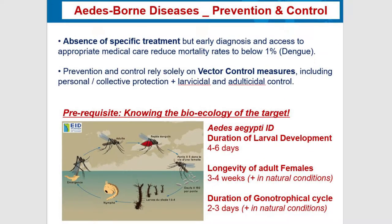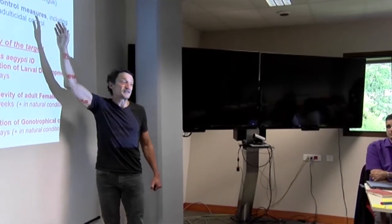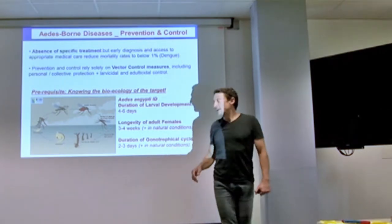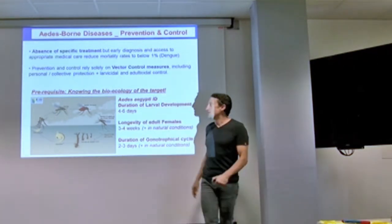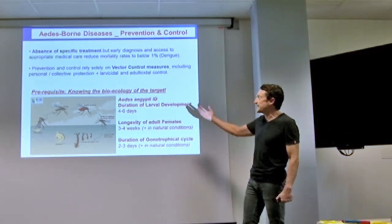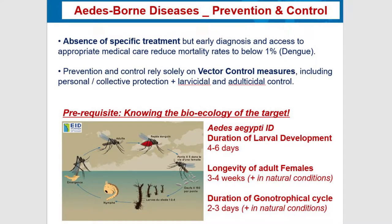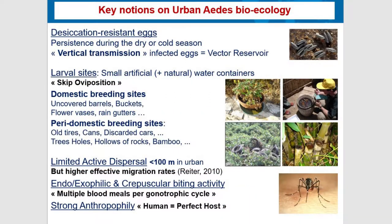In terms of prevention or control, let's go back to some important notions. We don't have, except for yellow fever, any cure or therapeutics, or any preventive drugs against these diseases. So prevention and control are mainly based on vector control. To conduct vector control, it's important to know the bioecology of the target — in this case, Aedes mosquitoes, urban Aedes — in terms of duration of larval development, longevity of adult females, and duration of the gonotrophic cycle, meaning the day intervals between two bites.